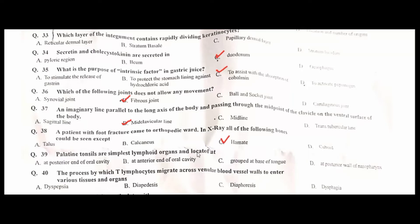Palatine tonsils are the simplest lymphoid organs, located at the posterior end of the oral cavity — A is the correct option. The process by which T lymphocytes migrate across venous blood vessel walls to enter various tissues and organs is diapedesis — B is the correct option.